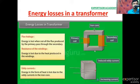Let's go for the energy losses in transformer. The first type of loss in energy in the transformer is flux leakage. Energy is lost when not all the flux produced by the primary passes through the secondary.